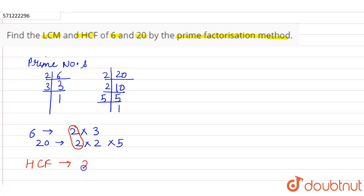So HCF of 6 and 20 is 2. Now we have to find the LCM.